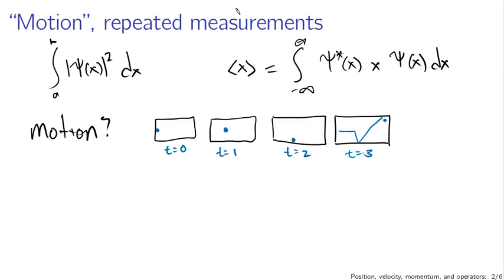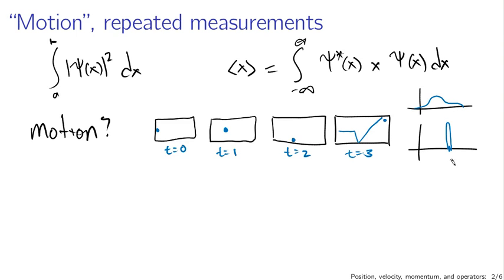We know that the position of the particle is not something we can observe at any given time with impunity, because of the way the observation process affects the wave function. When we talked about measurement, we discussed having a wave function and a probability density, and after we measure the position, the probability density has changed. The fact that measurement affects the system like this means we really can't imagine repeatedly measuring the position of a particle in the same system.